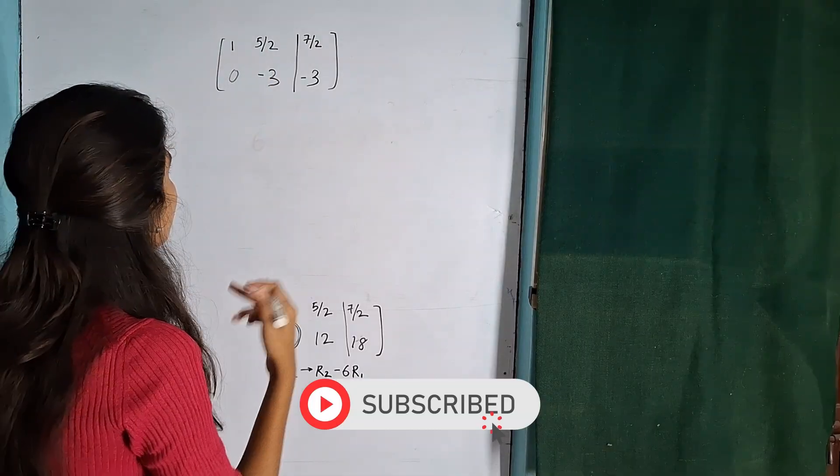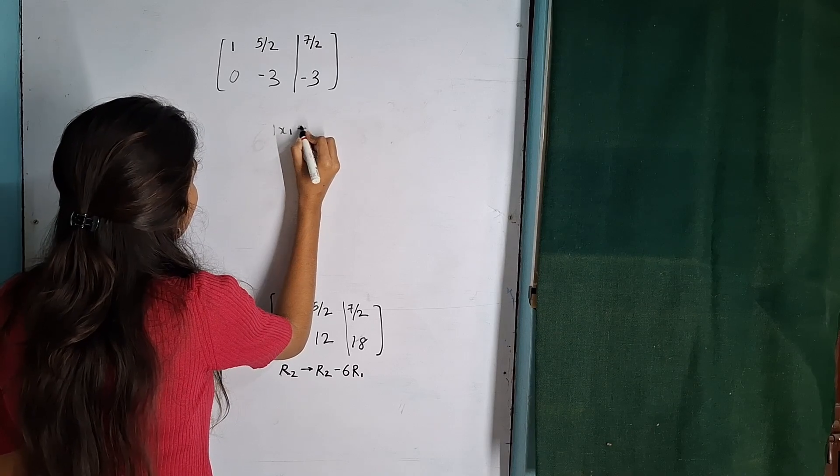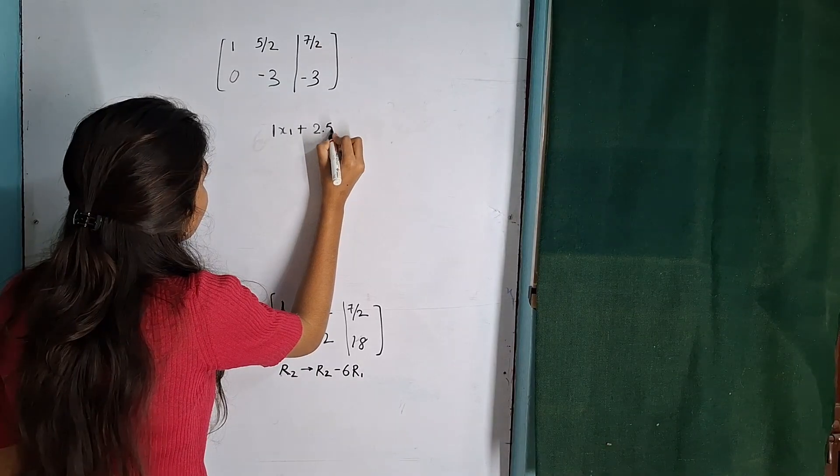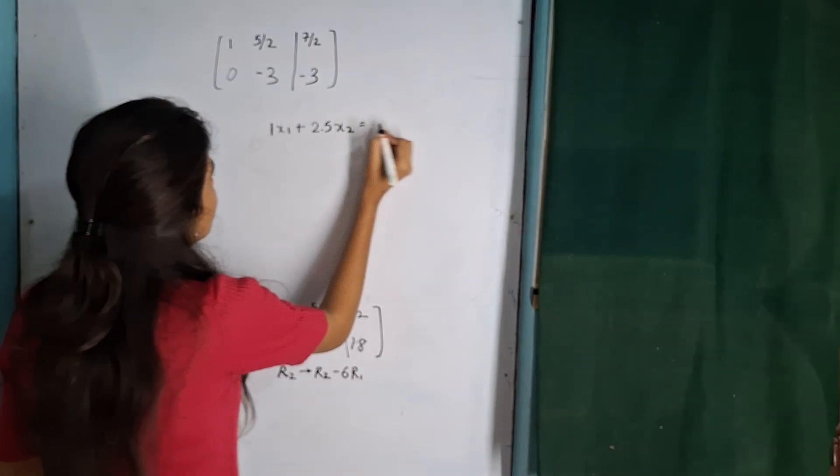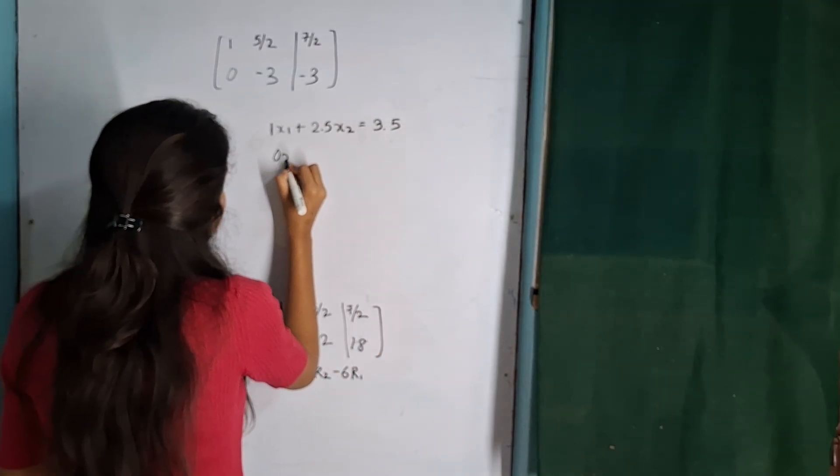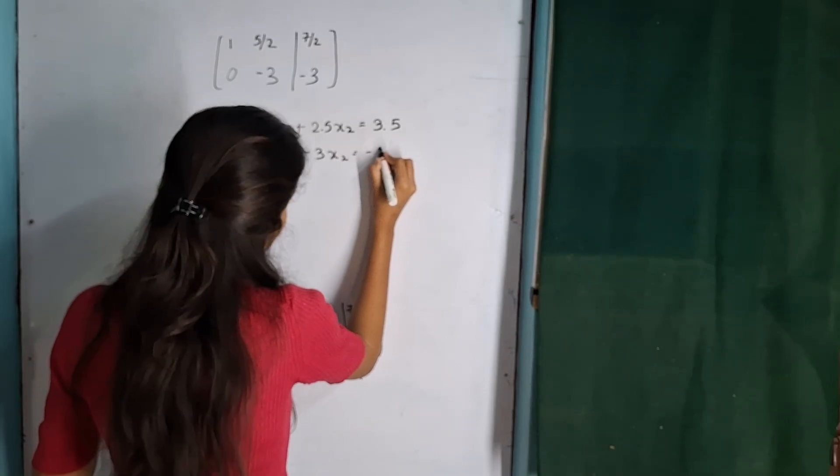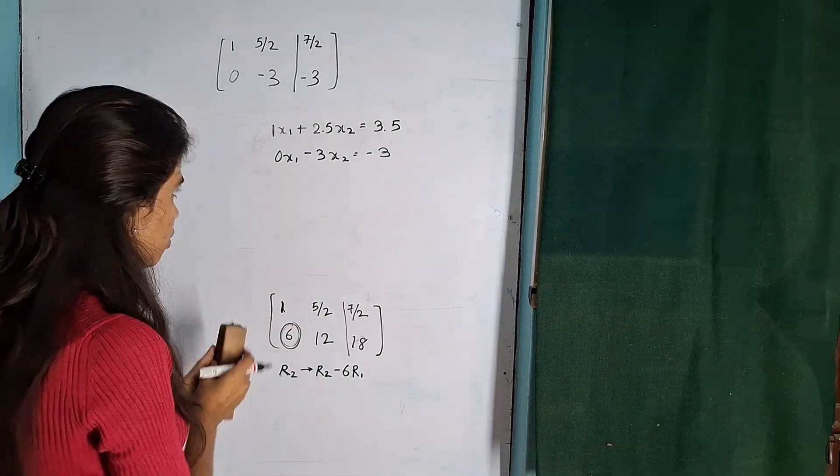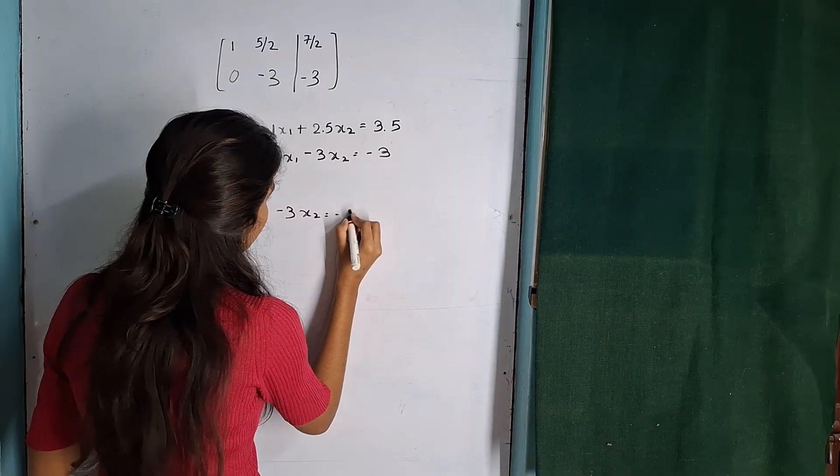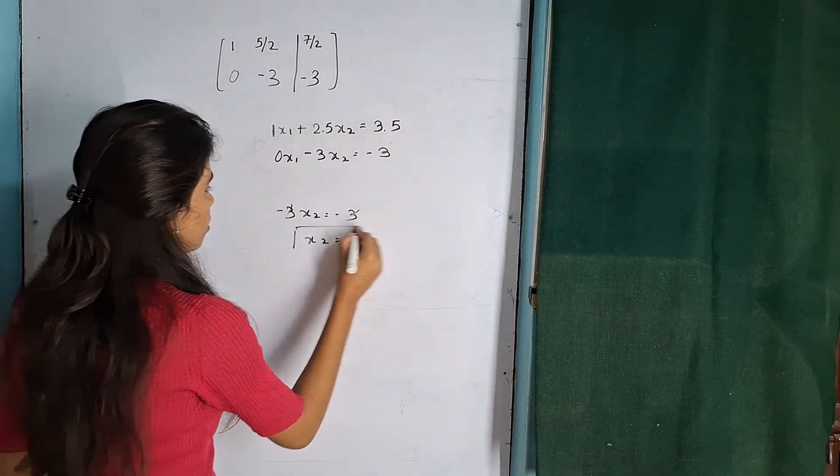This is what we got after performing the operations. We made this 1 and this 0. So now we are going to write it in the terms of x1 and x2. So 1x1 plus 2.5x2 equals 3.5, and 0x1 minus 3x2 equals minus 3. So from this equation we can easily find x2. Minus 3x2 equals minus 3, minus 3 minus 3 gets cancelled, x2 equals 1.